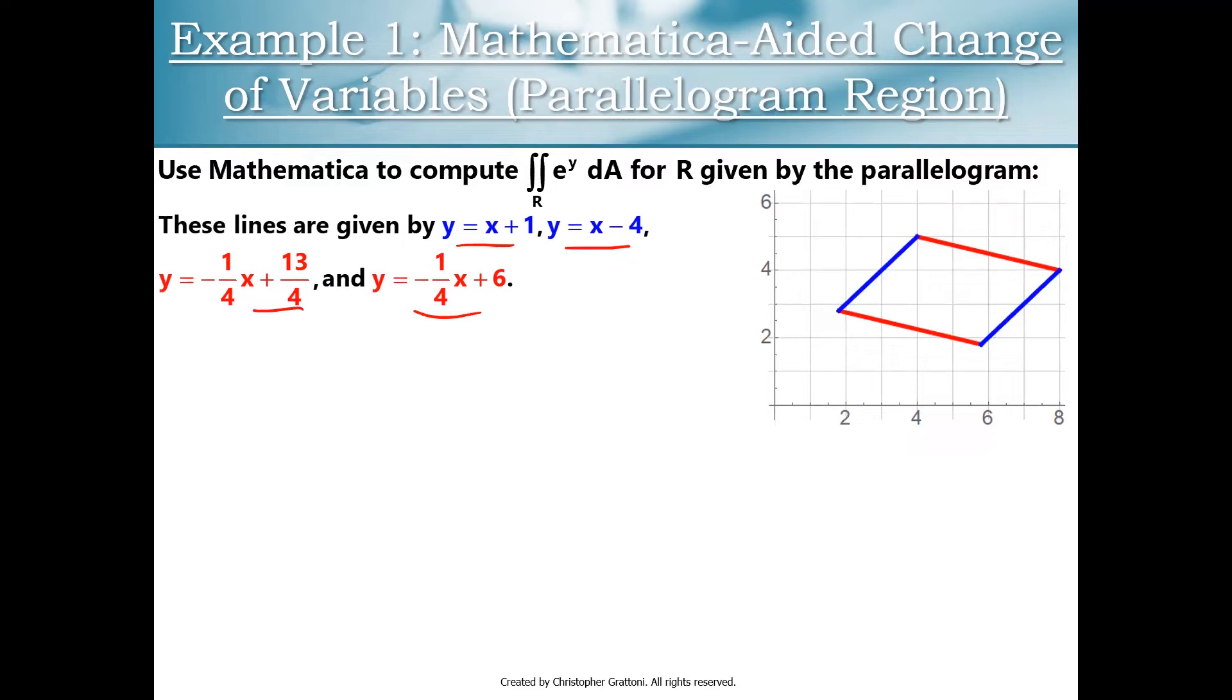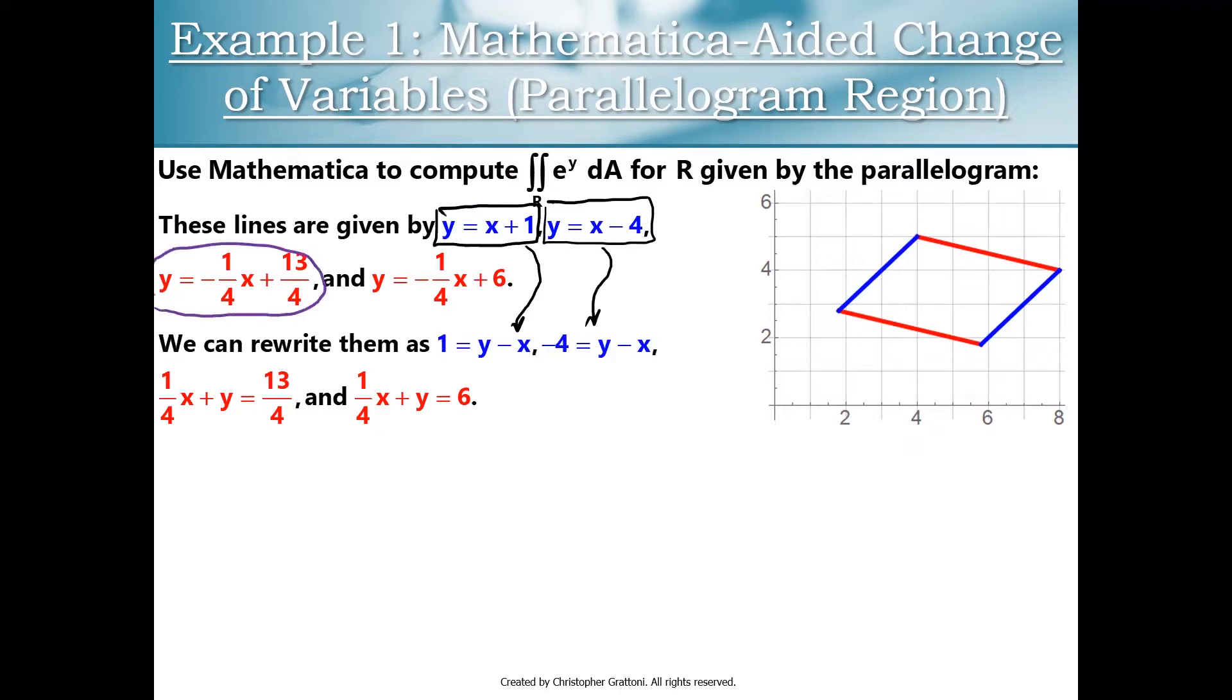You can see the two blue equations describe our two blue lines that are parallel to each other. Same thing for the red ones, they're parallel to each other, hence a parallelogram. Now what I can do is say I'm going to do a little bit of algebraic manipulation here. For example, I'm going to take my y equals x plus 1 and I'm going to get y minus x on the right side and 1 on the left side. Likewise, I can take y equals x minus 4 and rewrite that as negative 4 equals y minus x. And in a similar fashion, I can move the x's and y's to one side for my pair of red equations as well. I have 1 fourth x plus y equals, and then I have two different constants, 13 fourths and 6.